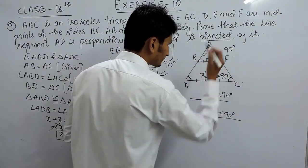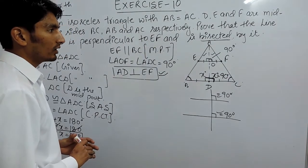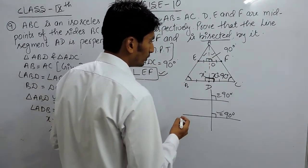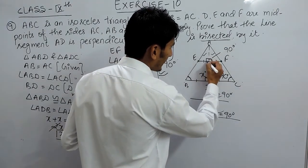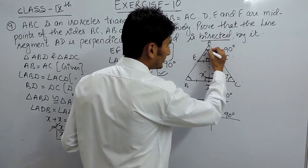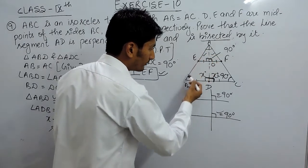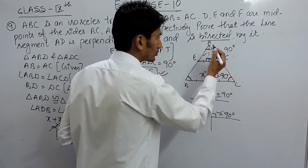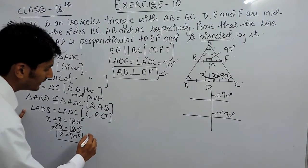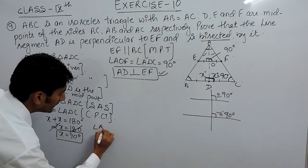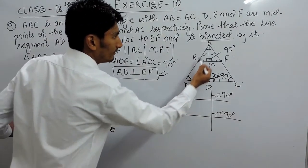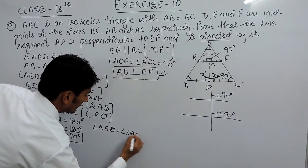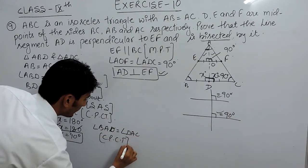To prove EO equals OF, we need to prove that triangles AEO and AOF are congruent. From the congruence of triangles ABD and ADC, by CPCT we have angle BAD equal to angle DAC — that is, AD bisects angle A. So I can write: angle BAD equals angle DAC, by CPCT.